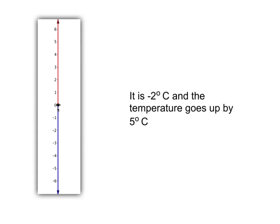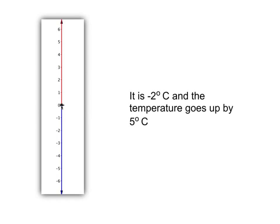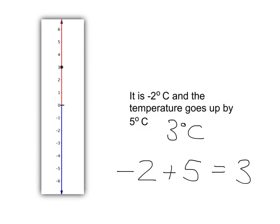Now, what if we are at negative 2 degrees centigrade and in this case it goes up by 5 degrees? Well, our picture will look like this. We start at negative 2 and go up 1, 2, 3, 4, 5, and end up at 3 degrees centigrade. We can summarise this by saying: minus 2 degrees centigrade, start there, add on 5 — in other words go up 5 — and we'll end up at 3 degrees centigrade.